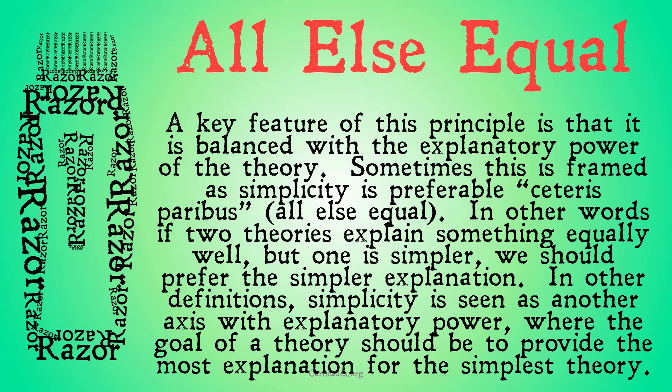A key feature of this principle is that it is balanced with the explanatory power of a theory. Sometimes this is framed as simplicity is preferable ceteris paribus — all else equal. In other words, if two theories explain something equally well but one is simpler, we should prefer the simpler explanation. In other definitions, simplicity is seen as another axis with explanatory power, where the goal of a theory should be to provide the most explanation for the simplest theory, and there's some degree of trade-off between simplicity and explanation.